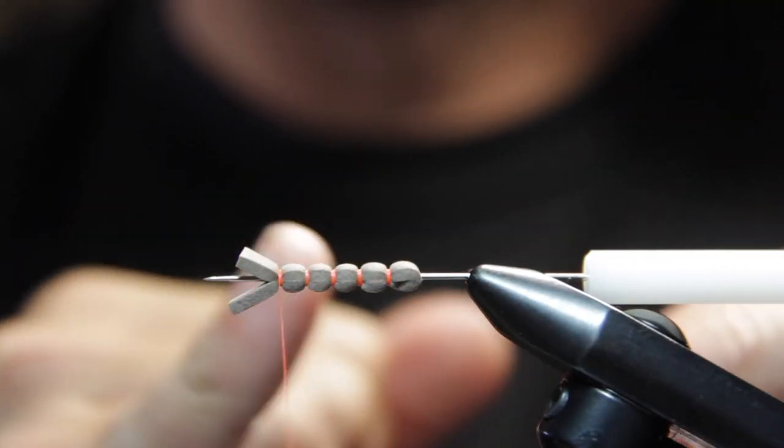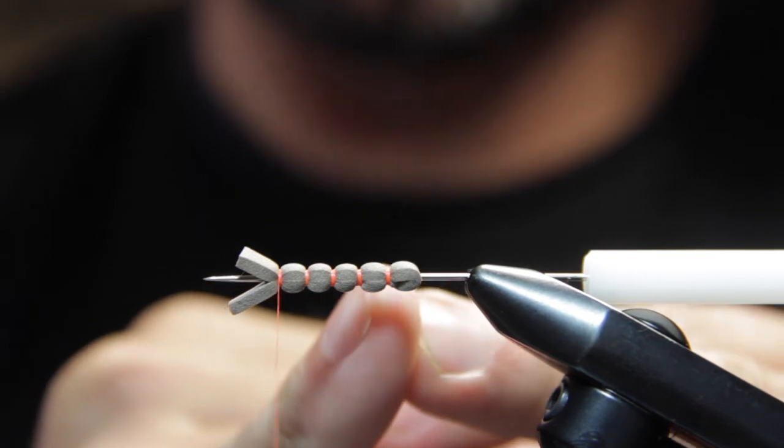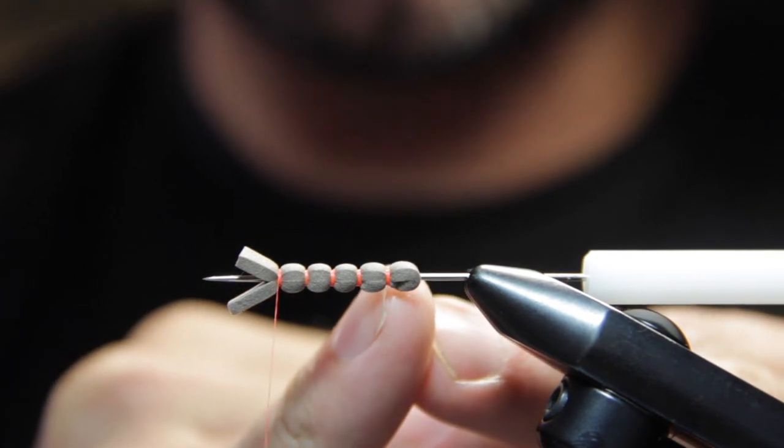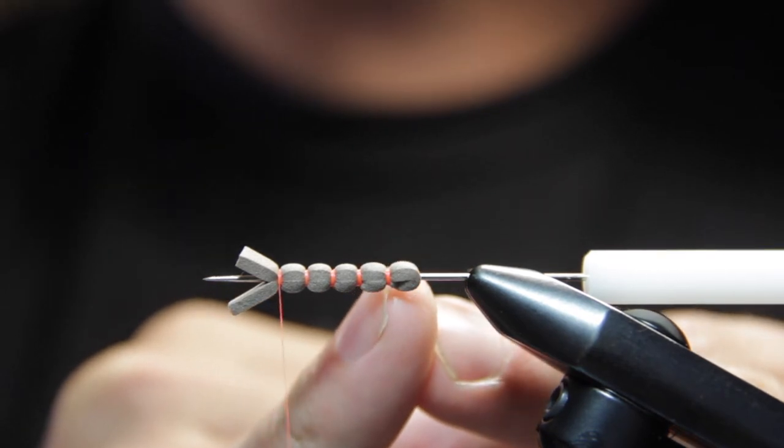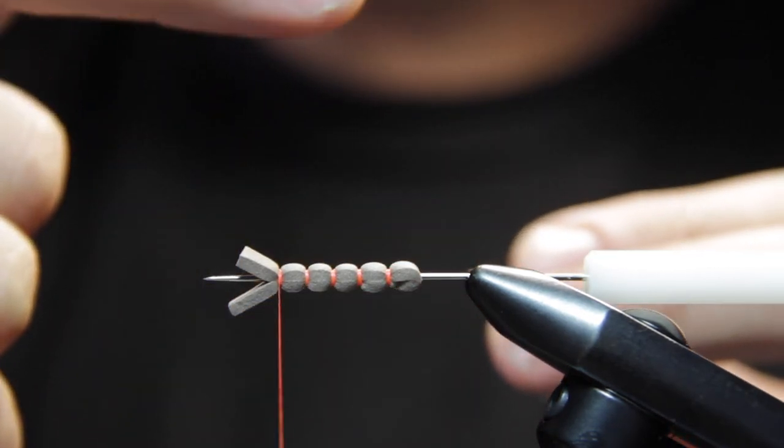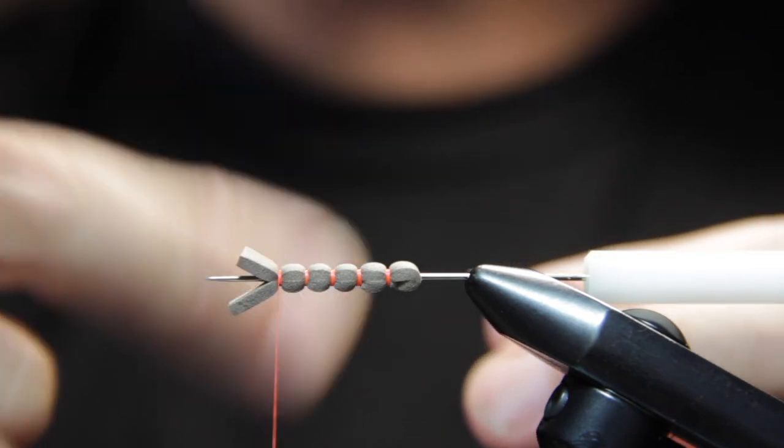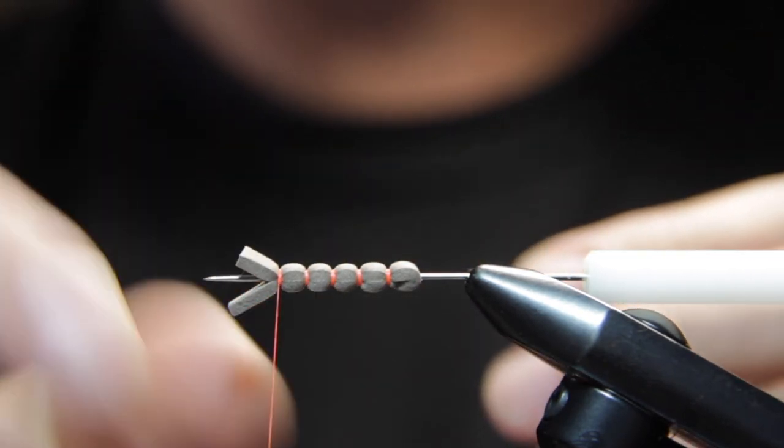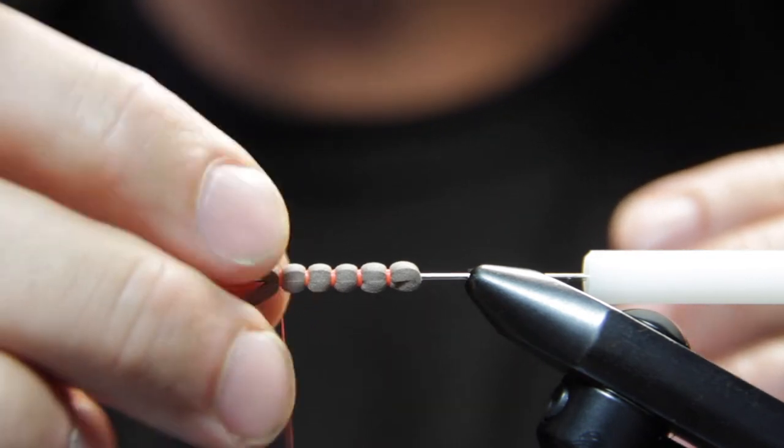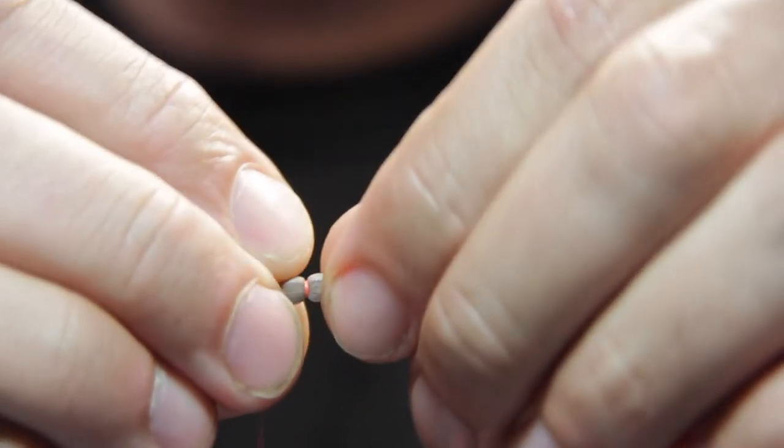And that's that. What I didn't mention is this first segment here is where we tied off our thread on the bodkin, or we've already started our thread rather. Just the compressions of those wraps there are going to secure that thread in there and keep it from coming unraveled inside the extended body.